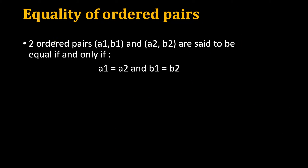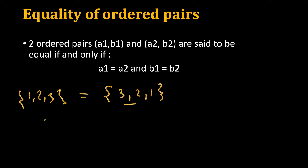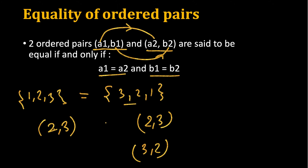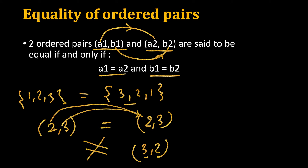Now, how do we compare two ordered pairs? In the case of sets, {1, 2, 3} equals {3, 2, 1} because ordering is not important. But for ordered pairs, ordering is important. Two ordered pairs (a1, a2) and (b1, b2) are equal only if a1 equals b1 and a2 equals b2. For example, (2, 3) equals (2, 3), but (2, 3) is not equal to (3, 2) — although the elements are the same, their order is different.